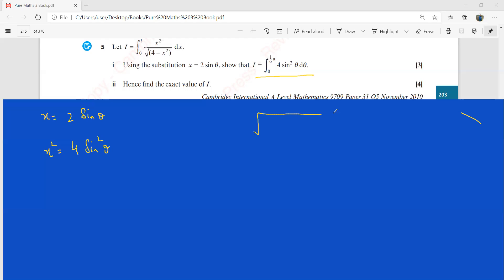And then your under root 4 minus x squared would be under root 4 minus 4 sine squared theta, which is 4 into 1 minus sine squared theta, which makes it 4 cos squared theta. And this is going to be 2 cos theta.